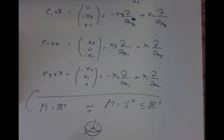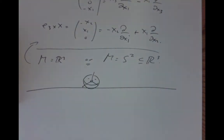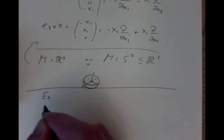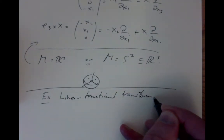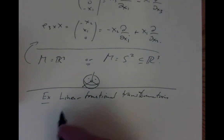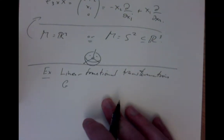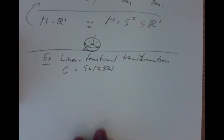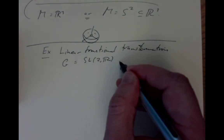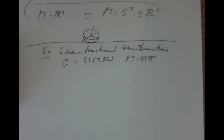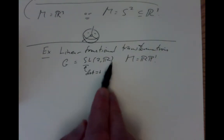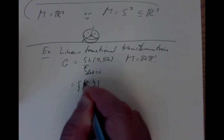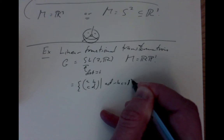Now let's carry out an example where the manifold is more abstract, using the theory of linear fractional transformations. Our group will be SL(2,R), the group of 2-by-2 matrices with determinant 1, acting on RP^1, the real projective line — the set of all lines through the origin in the plane. These linear transformations take lines to lines, so they act naturally on RP^1.